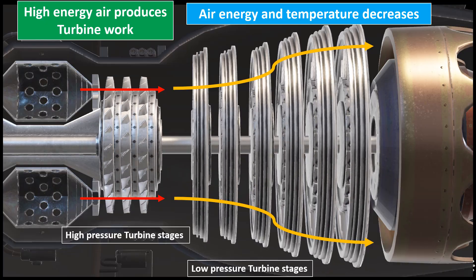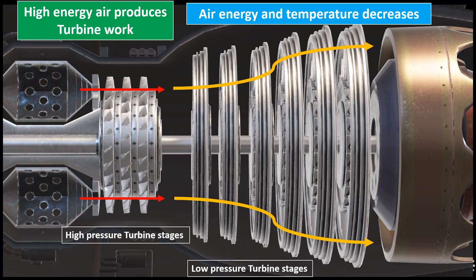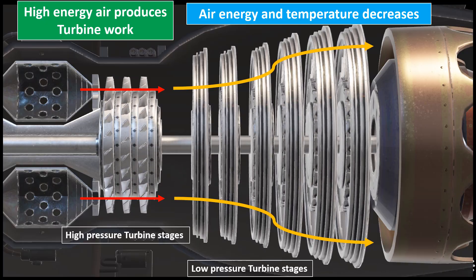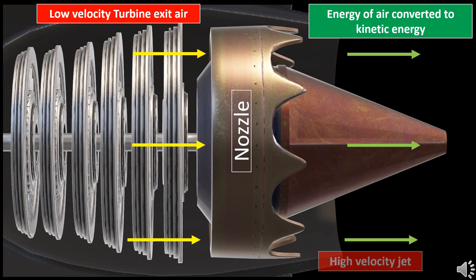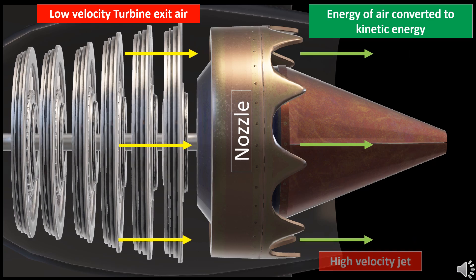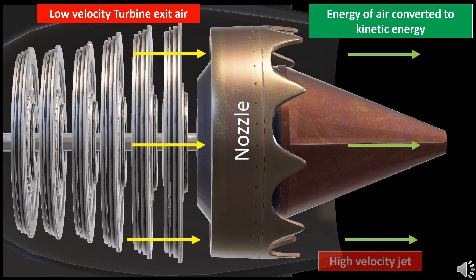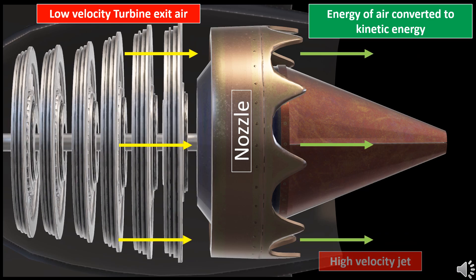Since the energy of the air is used for producing turbine work, the energy of the air decreases and the temperature also decreases as it passes through the turbine stages. The air from the turbine stages still has energy within it, and this air enters the nozzle of the engine.